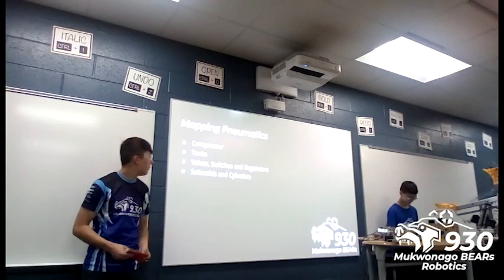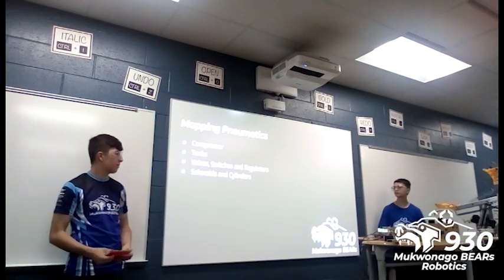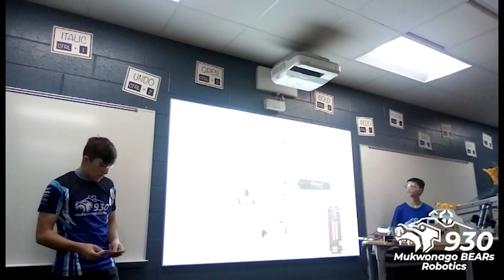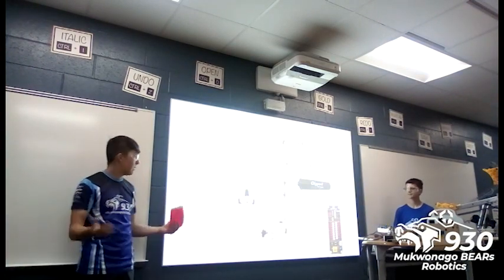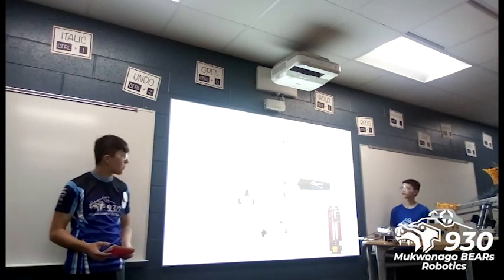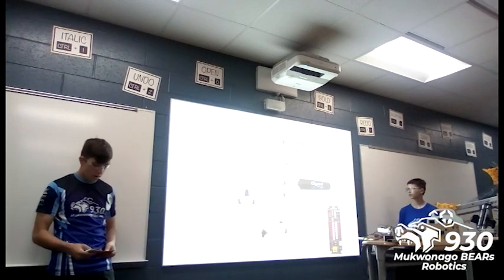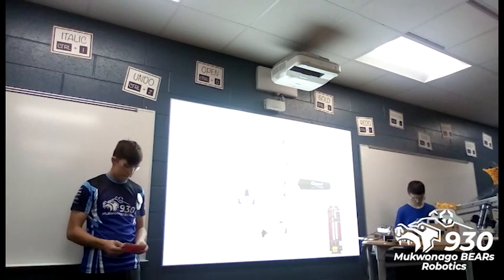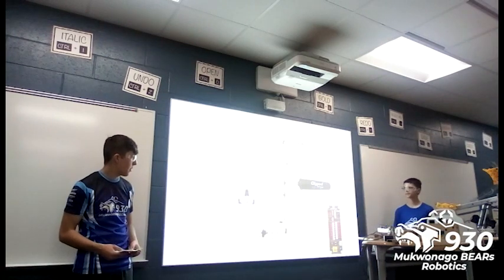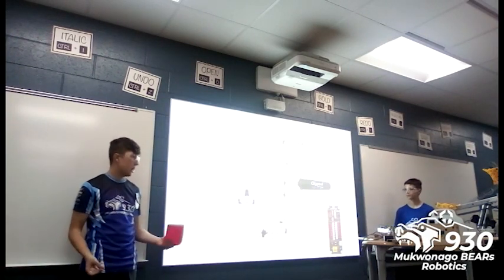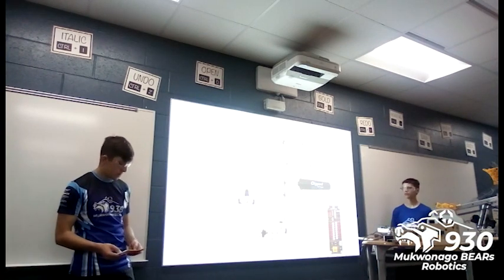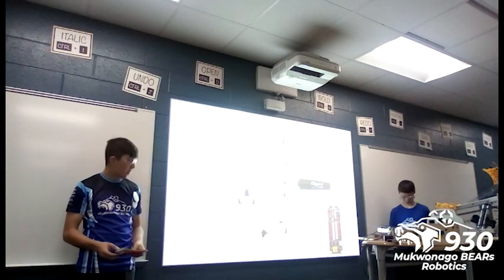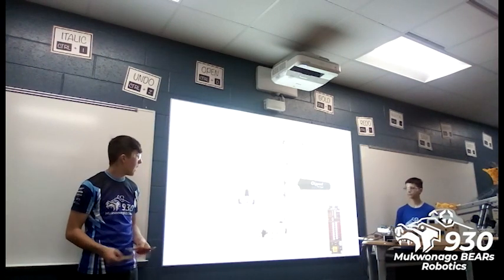Mapping pneumatics — we'll go over the main components mostly through the airflow. It starts at the compressor, which compresses air. The compressor is directly wired to your pneumatic hub, which is kind of like the brains of pneumatics on the robot — your center for electronics. The pneumatic hub offers all the ports for your single-acting and double-acting solenoids and cylinders, needs power from the PDH, and is required to be in the system.